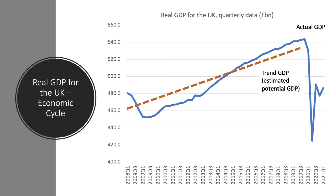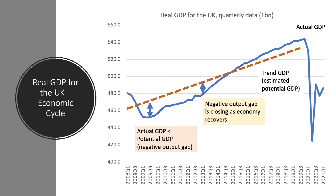GDP is estimated in real terms to have fallen by more than 10% in 2020. The economy has rebounded somewhat as restrictions eased, but it's still well below where it was at the start of 2020. I've plotted the blue line showing actual GDP, and we can put in an estimated trend line — the purple dotted line — showing potential GDP. When actual GDP is well below potential, we call that a negative output gap. When actual equals potential, the gap is zero, and when GDP is above potential, that's a positive output gap.